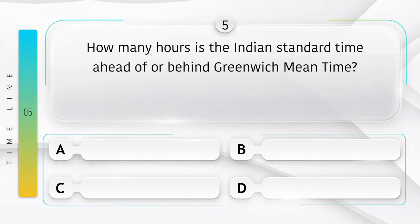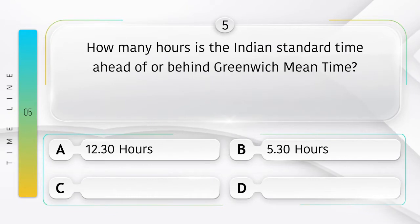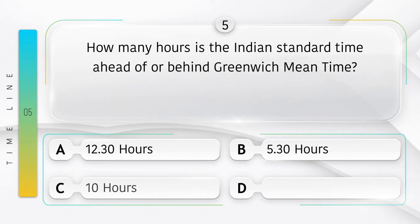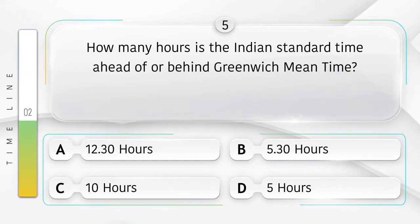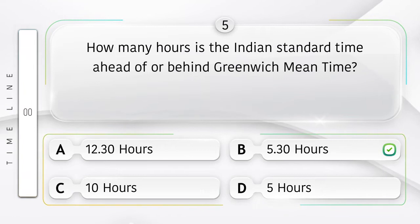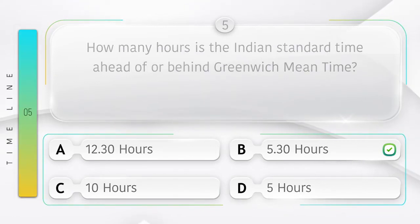How many hours is the Indian Standard Time ahead of or behind Greenwich Mean Time? Option A: 12.30 hours, B: 5.30 hours, C: 10 hours, D: 5 hours. Answer is option B: 5.30 hours.